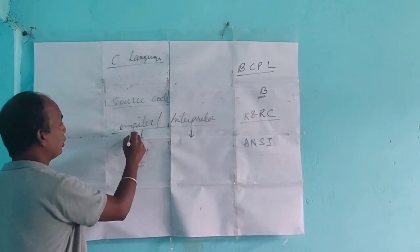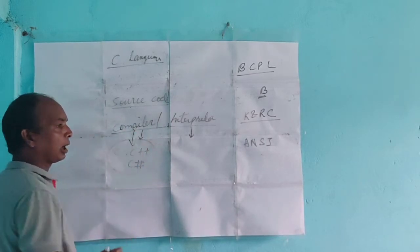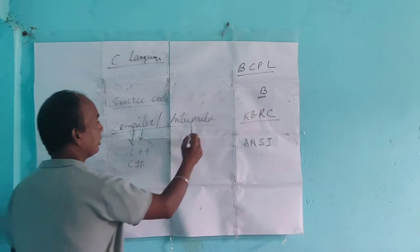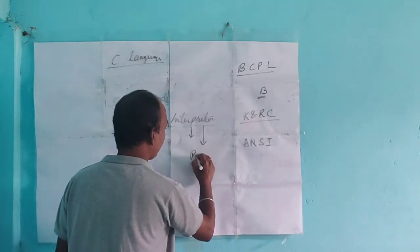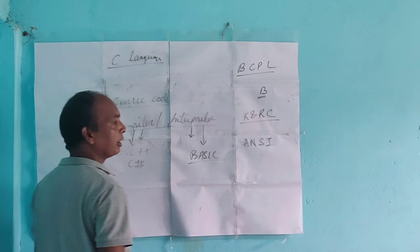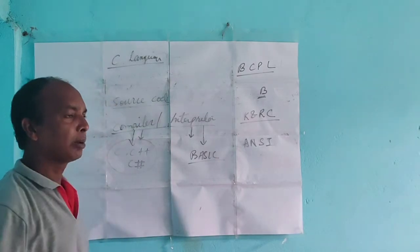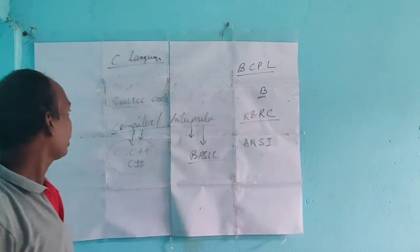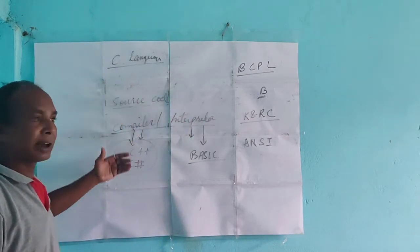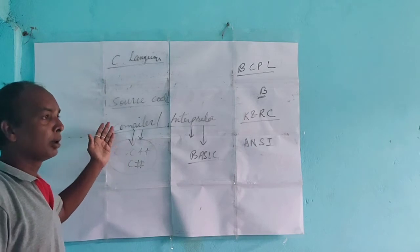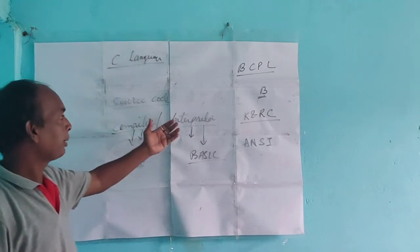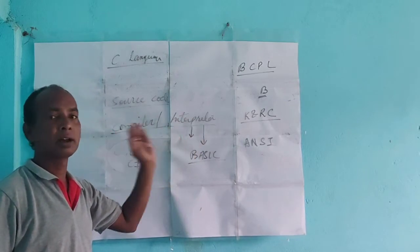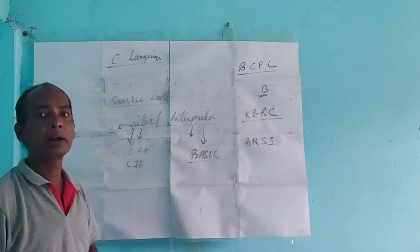A compiler converts high-level language to low-level language, and then to machine language. An interpreter — for example, used in BASIC — also converts high-level language to low-level language. The key difference: the compiler reads the whole program at once and converts it to machine code, while the interpreter reads and converts line by line.